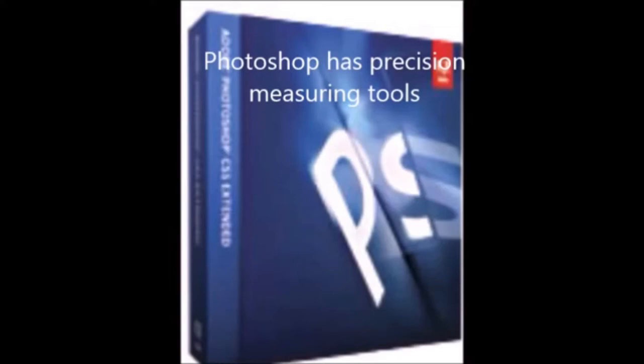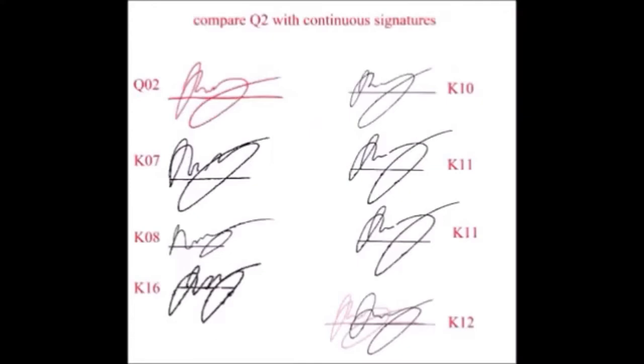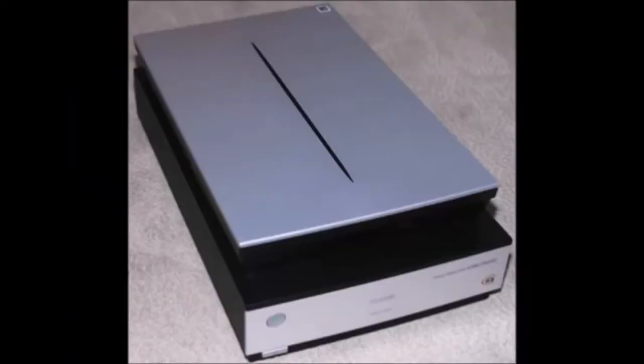We shoot the image using the MyScope microscope, which saves it to the computer. Then we call it up in Adobe Photoshop, where you can enlarge the image, change the color, and overlay one signature on top of another to see how similar they are — it's very powerful software. We also use a flatbed scanner to take the document and store it in the computer so we can bring it into Photoshop and manipulate it.